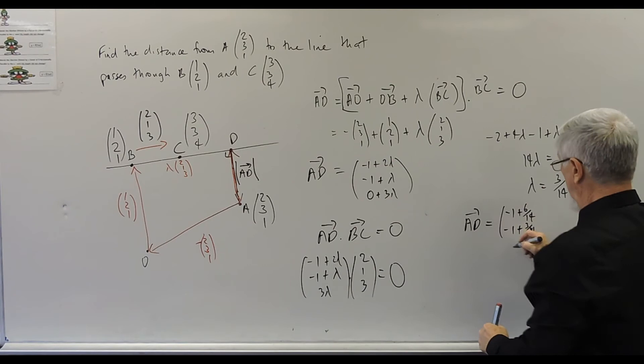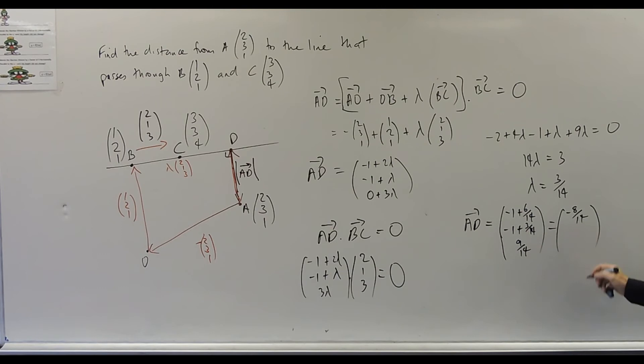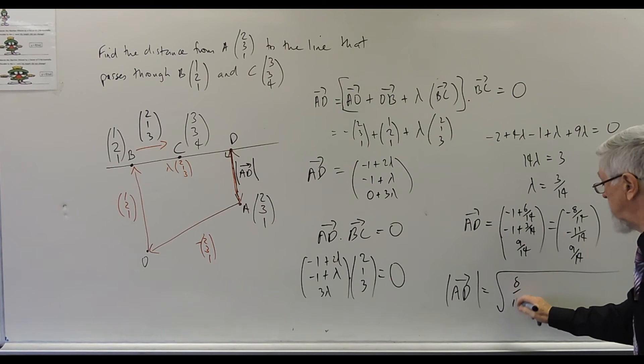Do you see it that quick in your head? No. I'm seeing 14. Minus 14 plus three. Minus 11 on 14. Nine on 14. And then you go to the magnitude of AD. You go to the square root of eight on 14 squared. Put in your calculator. So easy. Eleven on 14 squared. There it is. Question's done. Game.